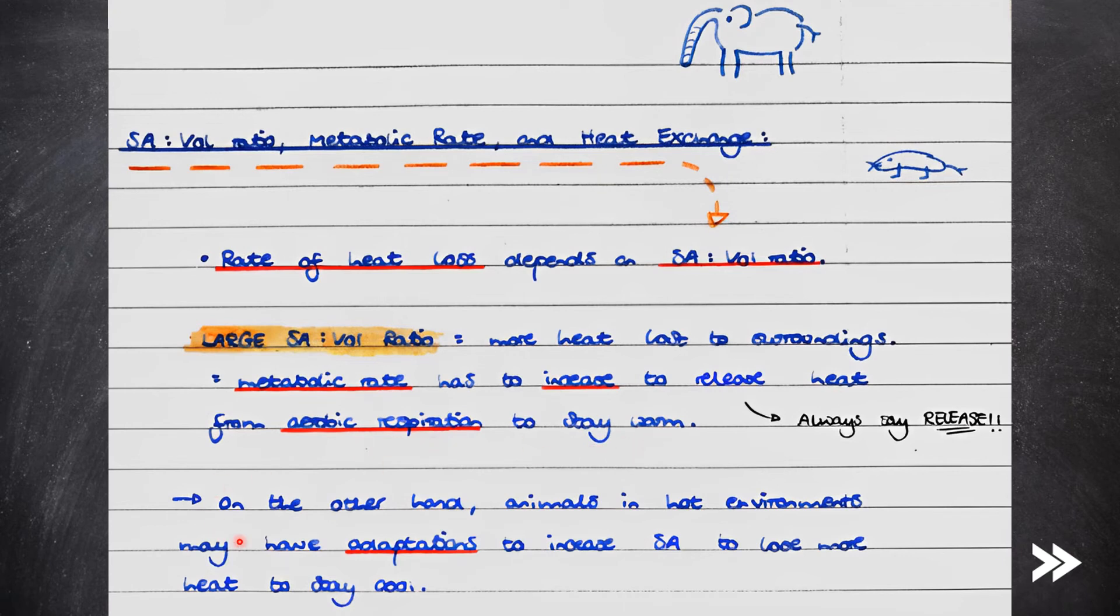On the other hand, animals in hot environments may have adaptations to increase their surface area to lose more heat to stay cool. Elephants, for example, do not have sweat glands and therefore have large ears with a large surface area to release more heat energy to the surroundings to help regulate their body temperature.